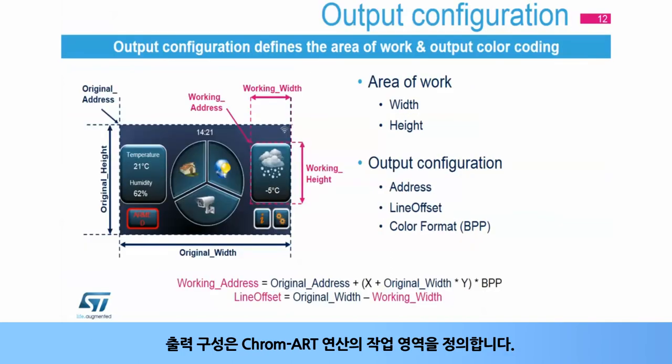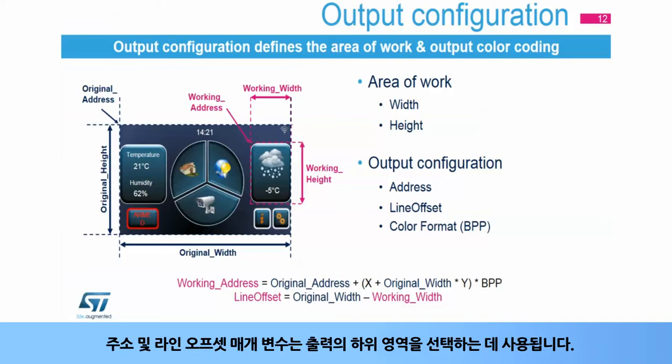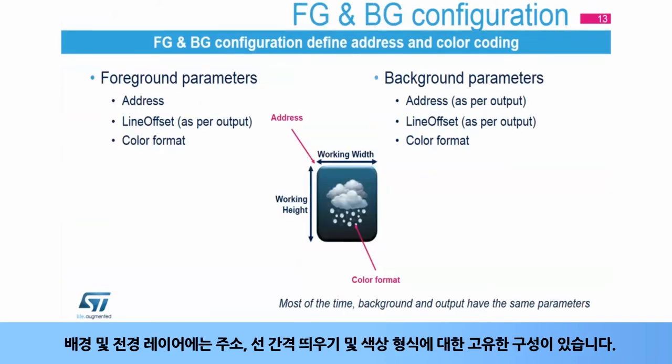The output configuration defines the working area for the Chrom-ART operation. The address and line offset parameters are used to select which sub-area of the output is concerned. The background and foreground layers have their own configuration for address, line offset, and color format.